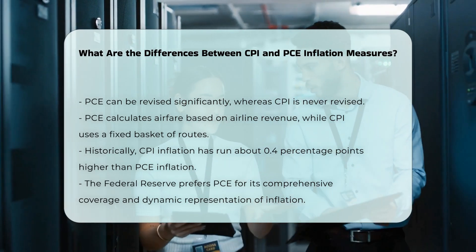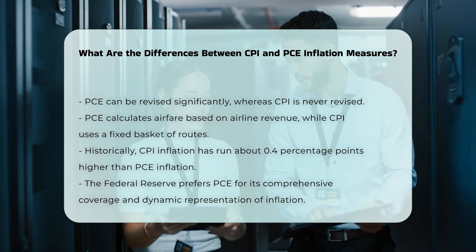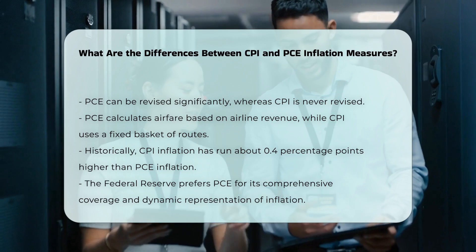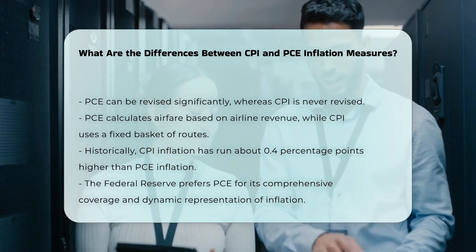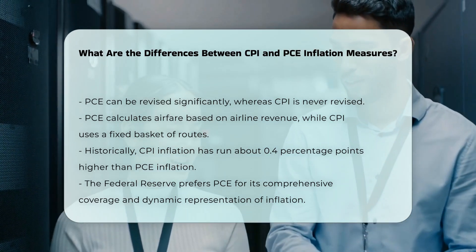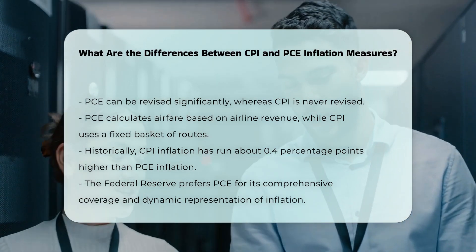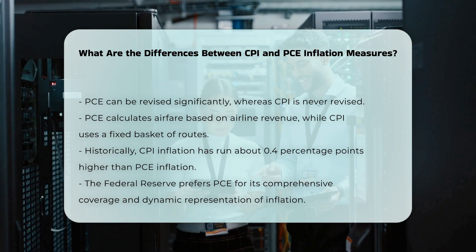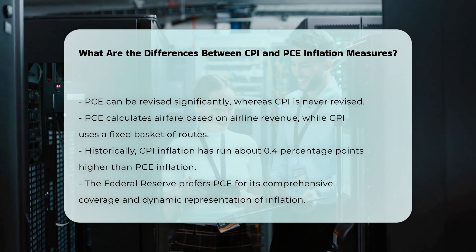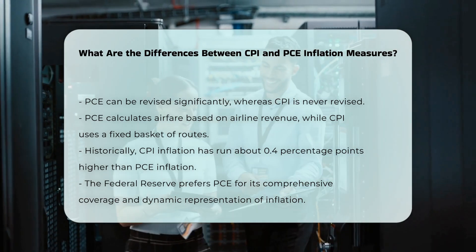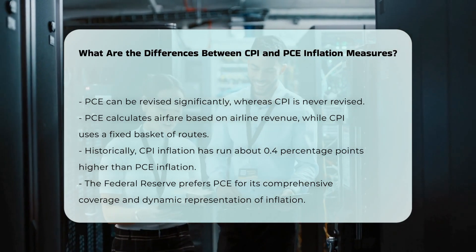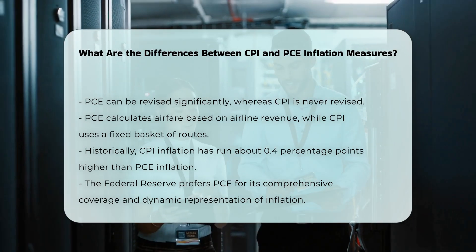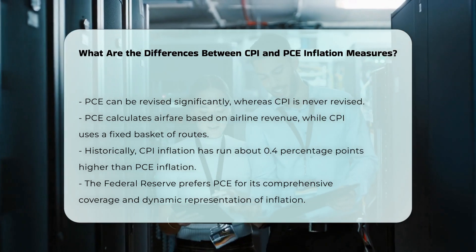Historical trends. Over long periods, the CPI and PCE tend to track each other, but short-term divergences are common. Historically, CPI inflation has generally run about 0.4 percentage points higher than PCE inflation, although this gap can vary significantly depending on the economic conditions.